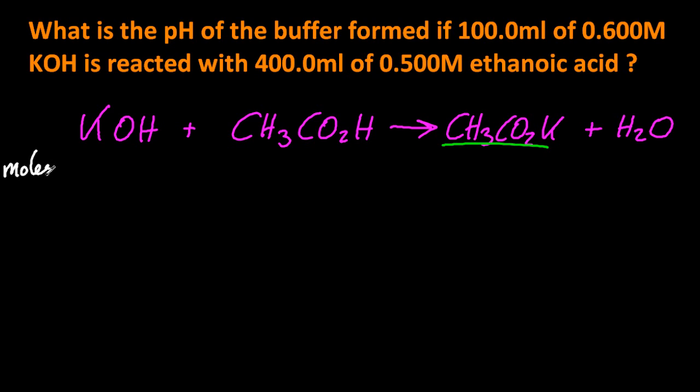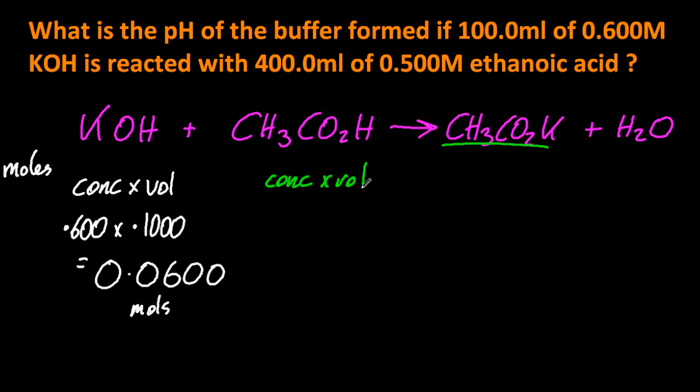So let's work out the moles, just to see if that's true. So moles is concentration times volume. And you can get those numbers from the question. 0.06 moles. And now let's work it out for the weak acid, and hopefully that will be more moles. It will be excess. Then you know you're on the right track. Taking the numbers from the question, that gives you 0.2 moles, yes, that's excess.